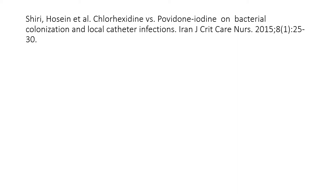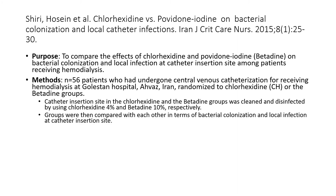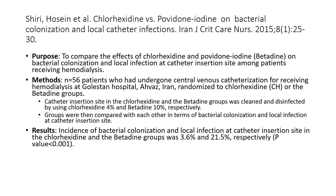Another study compared chlorhexidine versus betadine in 56 patients undergoing dialysis catheter placement. The catheter insertion site was prepared with either chlorhexidine or betadine, and patients were followed for infection. The incidence of bacterial colonization and local infection was only 3% in the chlorhexidine group versus 21% in the betadine group — again supporting the idea that chlorhexidine is a much better antiseptic for dialysis units.